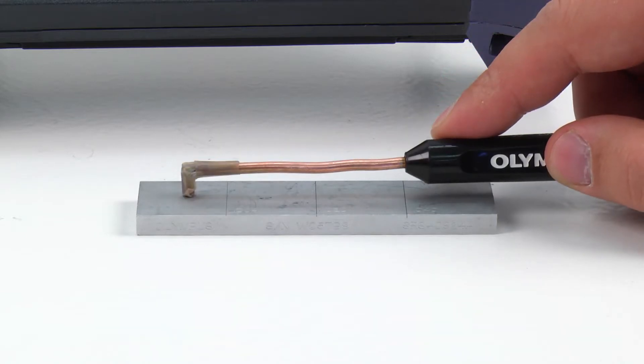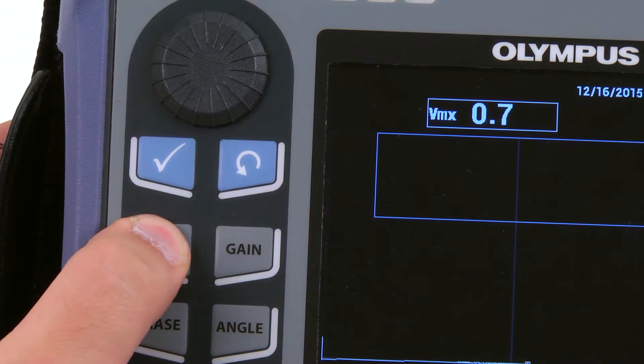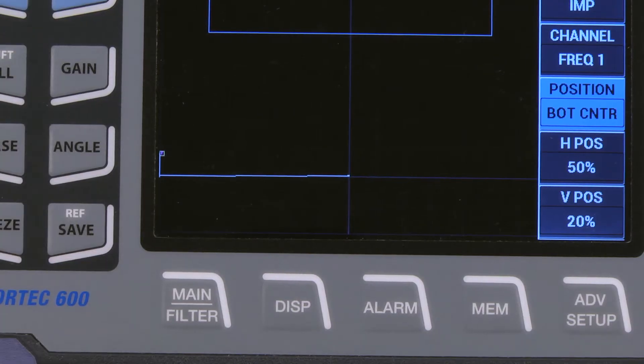Place the probe on a defect-free area of the standard. Press and hold the Null key. This will activate the auto liftoff function. When you hear the beep, lift the probe. The cursor should appear on the horizontal axis to the far left. If it does not, repeat the step.